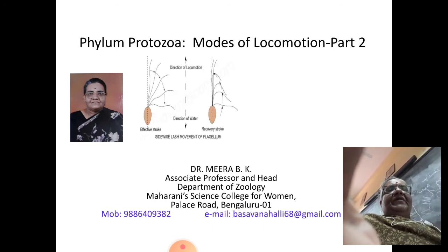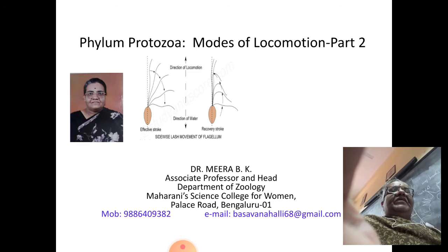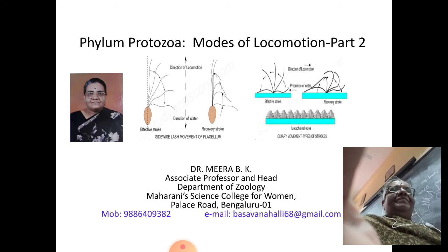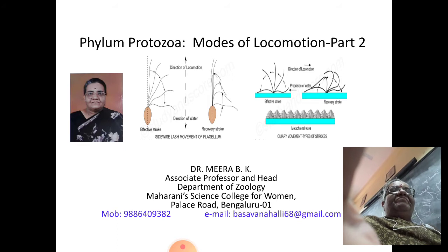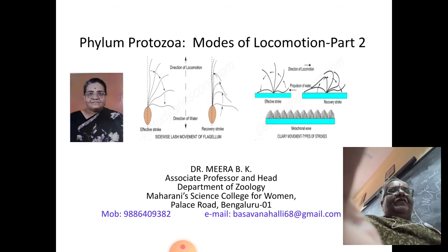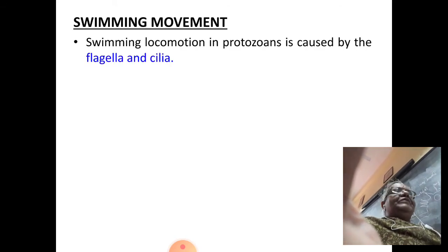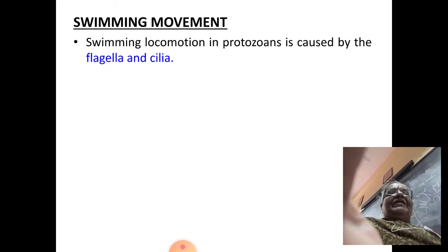You can see here one picture showing the flagellar mode of locomotion as exemplified by Euglena, and one more picture showing the ciliary mode of locomotion as exemplified by Paramecium. This we are going to learn today. The concepts are a bit complicated; try to follow carefully.